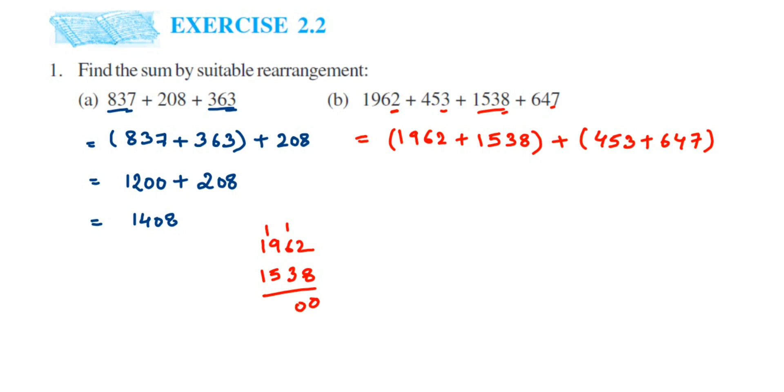Plus the second number which is 453 plus 647. So 7 plus 3 is 10. Now we have 5 plus 4 which is 9, 9 plus 1 the carry is 10. Now 6 plus 4 is 10, 10 plus 1 is 11, so we got 1100 here. So this is equal to 1100.